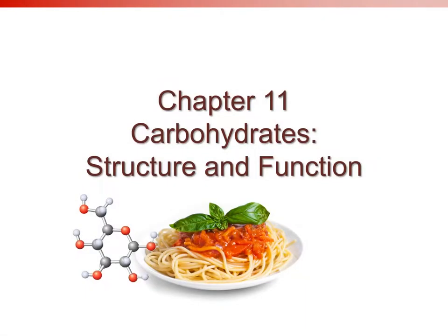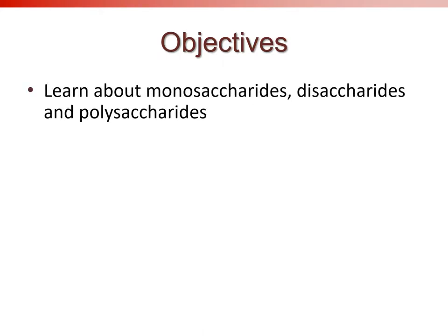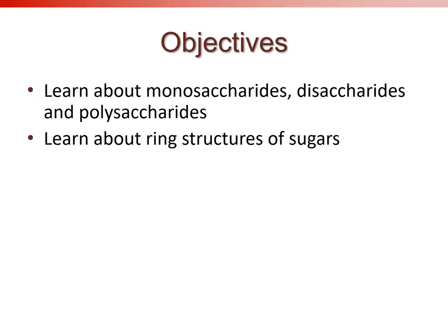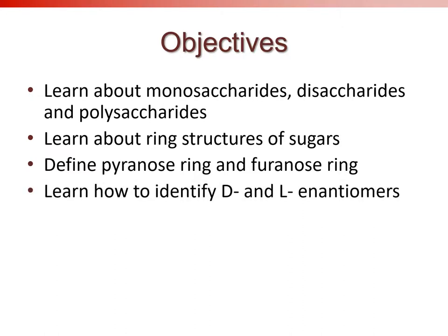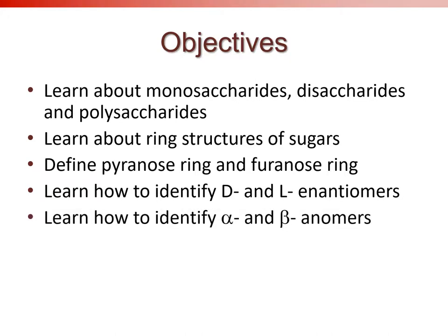We're at chapter 11 covering carbohydrates — we'll look at their structure and function. Our objectives include learning about monosaccharides, disaccharides, and polysaccharides. 'Saccharide' means sugar, and mono, di, and poly tell us how many sugars there are. We'll learn about the ring structure of sugars, define pyranose and furanose rings, and identify D and L configurations, as well as alpha and beta anomers.